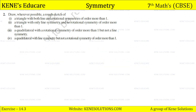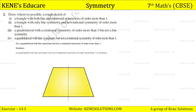Then, a quadrilateral with line symmetry but not a rotational symmetry of order more than one — for this you should give a trapezium as an example. Which shape is it? This is a trapezium shape. You can give this example.